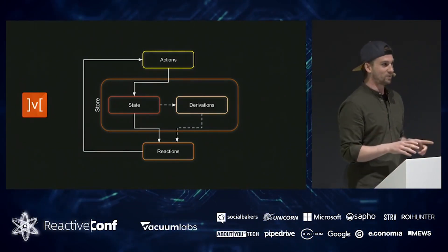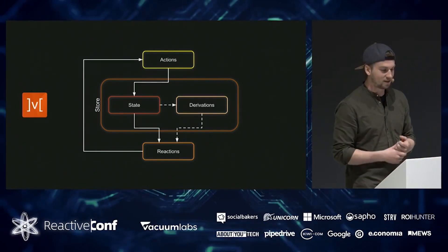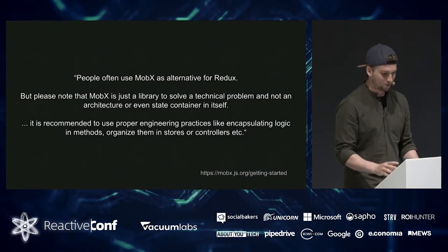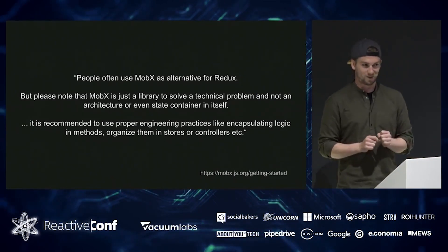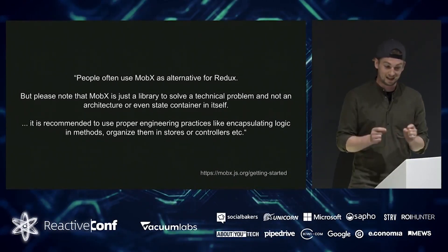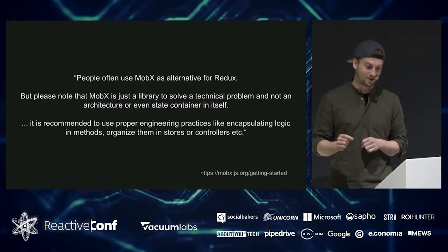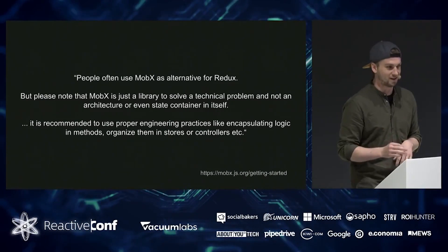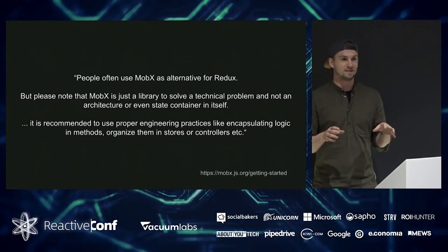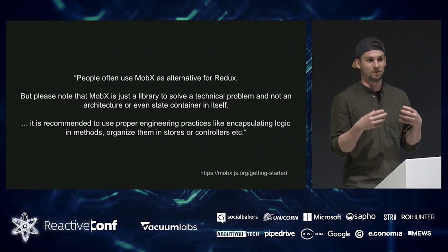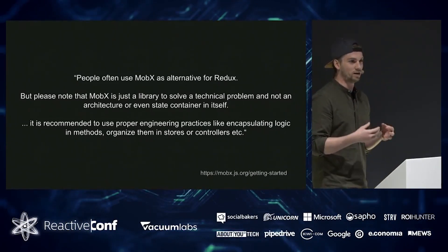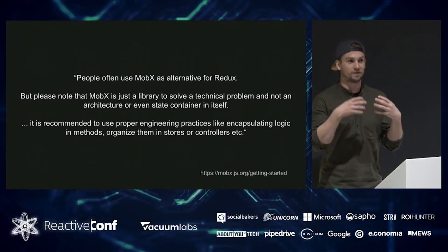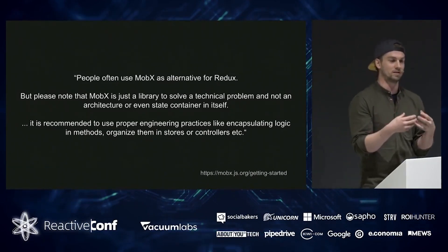The cool thing is that these reactions can mutate the state right away, without having to fire an explicit action as you would in Redux, which makes it way more approachable. I want to quote the MobX documentation: 'People often use MobX as an alternative for Redux, but please note that MobX is just a library to solve a technical problem and not an architecture or even a state container.' So it makes sense to approach MobX in a similar fashion to Redux, but you don't have to — you don't have the extra complexity that Redux forces on you.